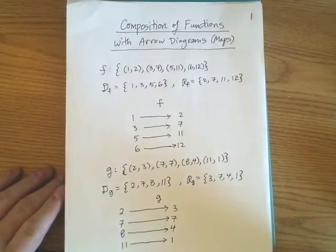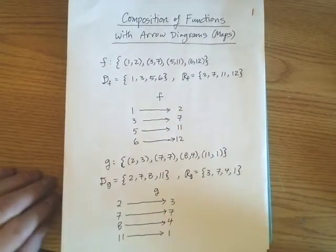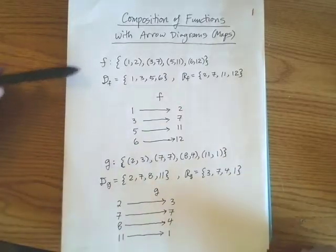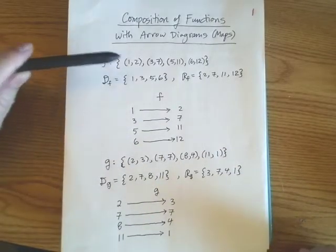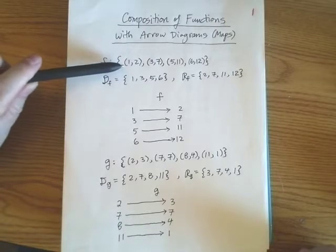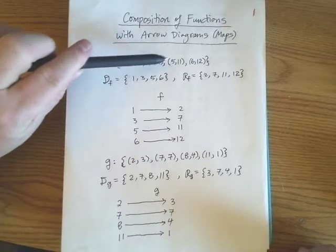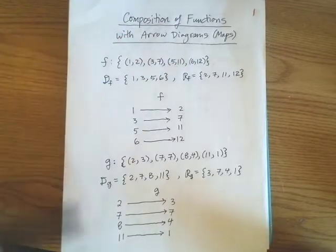So I'll run through a quick example here. Let's go ahead and say that we had, let's suppose that we have a function I'm calling F, and it consists of the following ordered pairs: (1,2), (3,7), (5,11), and (6,12).